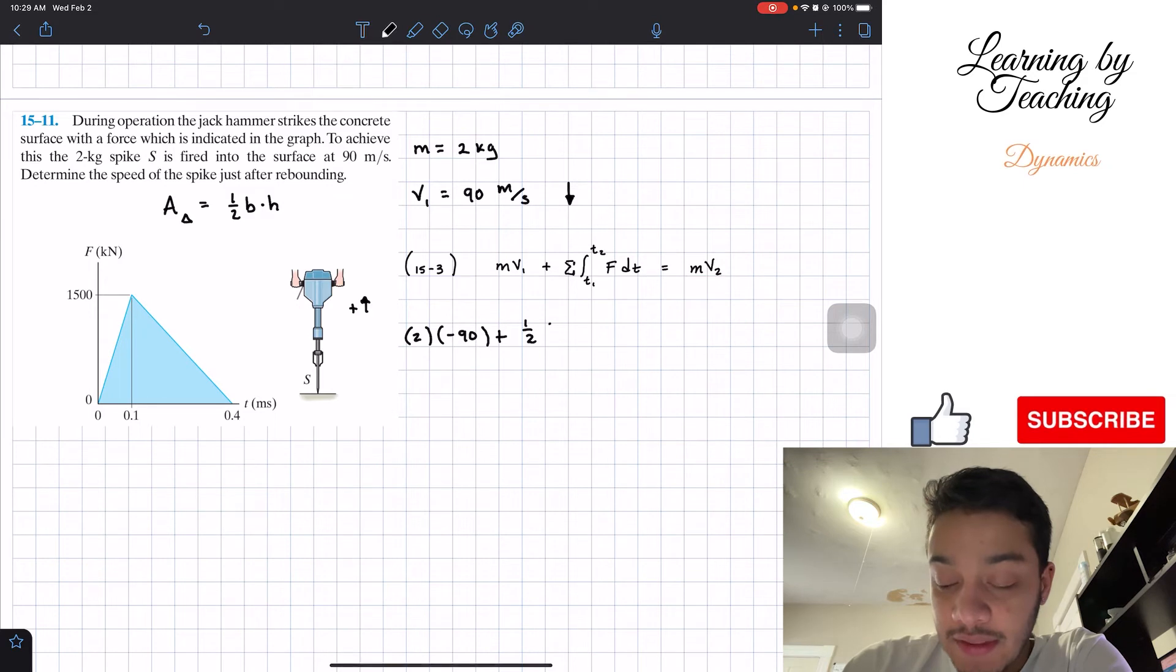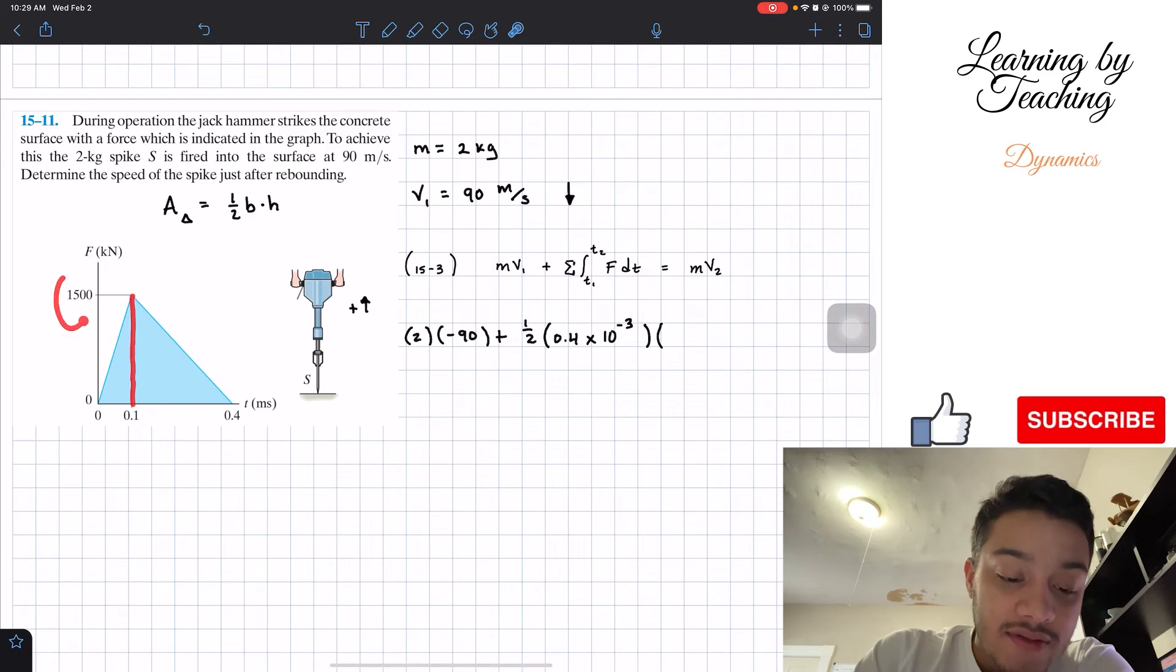Well, what is the base of this triangle? It goes from 0 all the way to 0.4, so we got 0.4. Let's check out the units, it's milliseconds. So what we need is to convert it to seconds. So I'm going to multiply this by 10 to the negative 3 in order to convert it to regular units. Multiply by the height. Well, the height of this triangle is 1500.